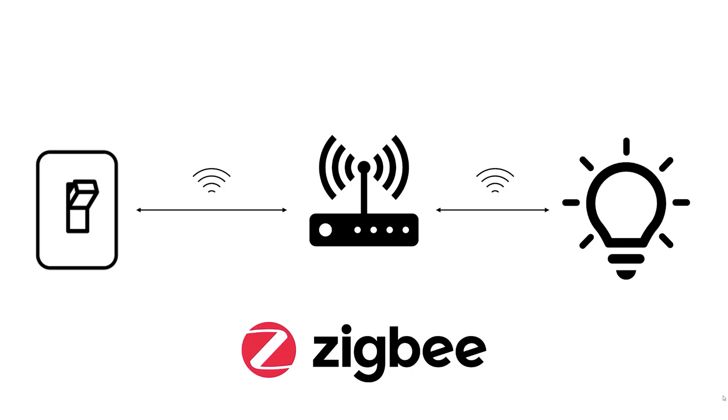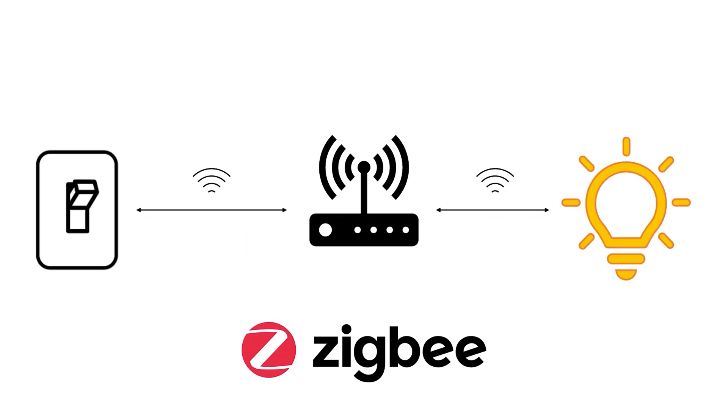Zigbee is a wireless communication standard that many smart device companies like Philips Hue, Amazon, Acara, and Sonoff use to control their products. When you press the button on a Hue dimmer switch, it sends a wireless signal to your Philips Hue hub over the Zigbee protocol, which in turn sends another Zigbee signal to your Philips Hue light bulb telling it to turn on. If you want to know more about what Zigbee is and how it works, I strongly recommend you check out the video I made about this — I've put a link in the description below.